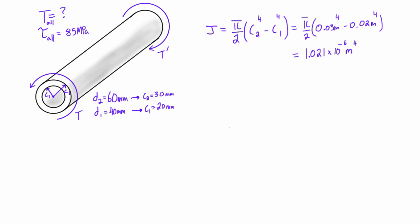Alright, now we're going to use the exact same equation that we've been using before. So we have our shear stress is equal to T times C over J. Now in this case, because we're saying that the maximum allowable shear is 85 MPa, that's what we're going to plug in here.